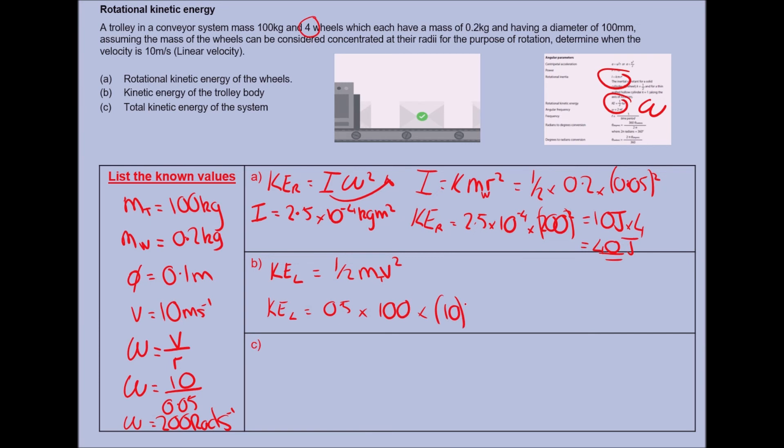Don't forget, up here I've used the mass of the wheels, down here I've got the mass of the trolley. Linear kinetic energy is equal to 0.5 times 100 times 10 squared. So half of 100 times 10 squared will give us 5000 joules.